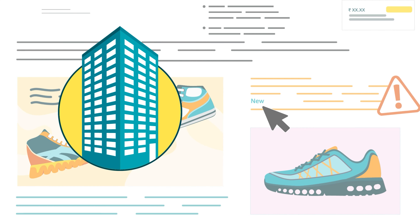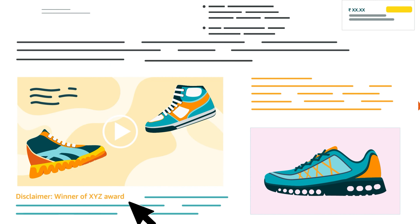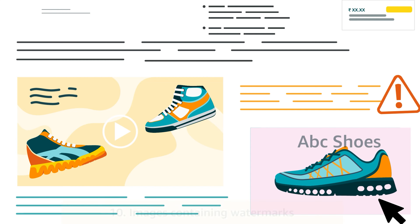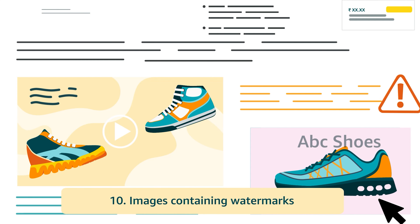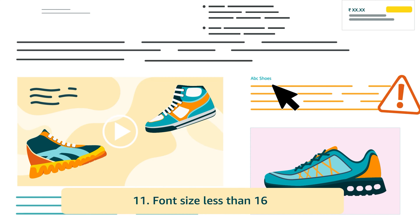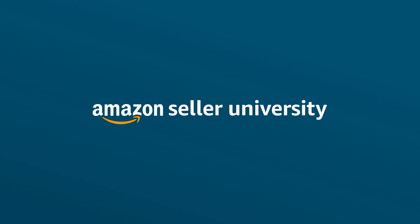Quotes must be from well-known publications or public figures. Product award information must be presented with a disclaimer. Blurry or low-quality images. Images containing watermarks or unreadable text. Font size less than 16 and not readable against its background. Any other kind of restricted products or prohibited keywords. This brings us to the end of this video on A-plus content. Thank you and happy selling on Amazon.